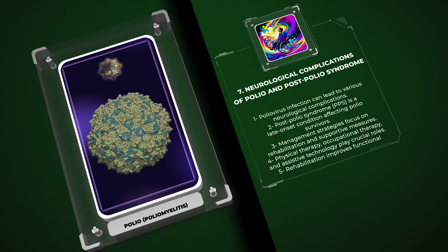The exact pathophysiology of PPS is not fully understood, but it is believed to involve mechanisms such as the degeneration of surviving motor neurons, muscle overuse, and inadequate compensation for previous muscle damage. Management strategies for neurological complications and post-polio syndrome primarily focus on rehabilitation and supportive measures. Physical therapy, occupational therapy, orthotic devices, and assistive technology play crucial roles in improving functional abilities and enhancing quality of life for individuals affected by these conditions.